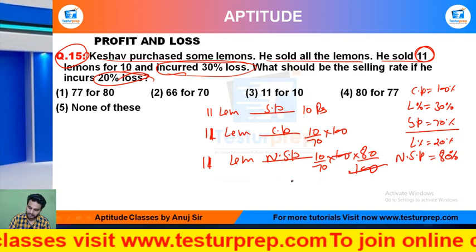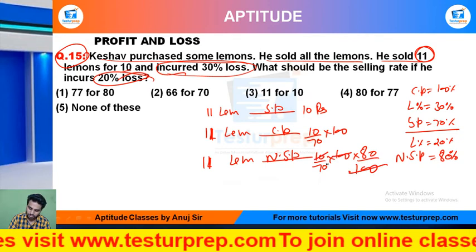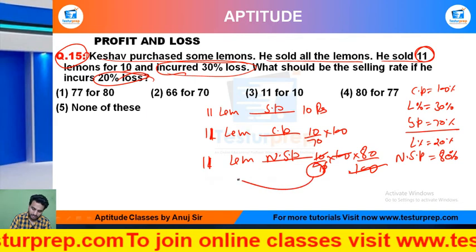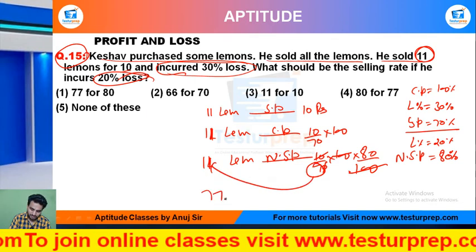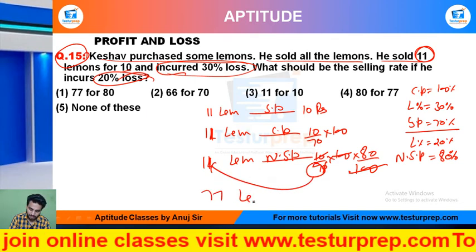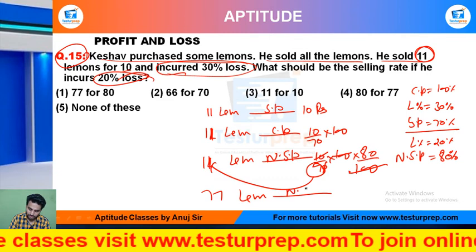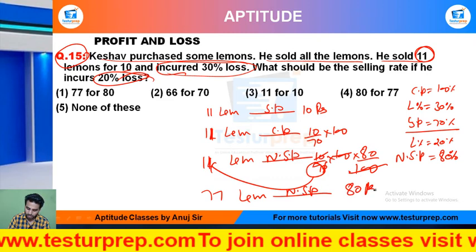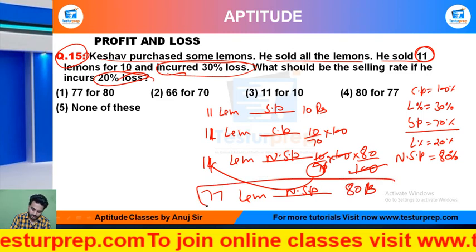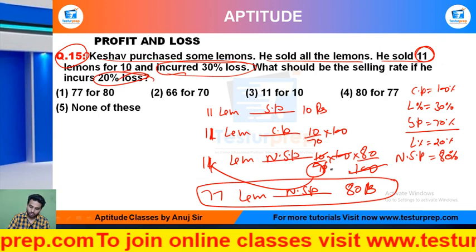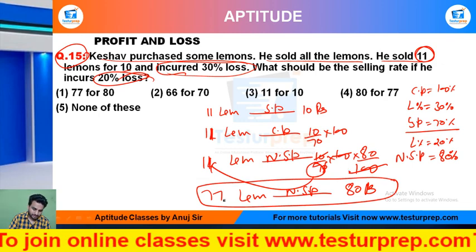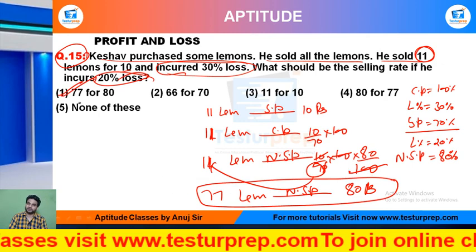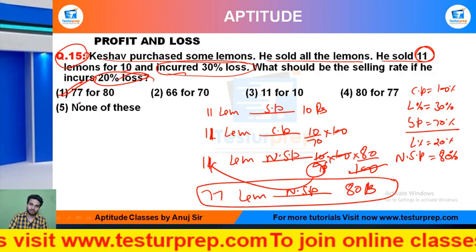The 100s cancel out, and the zeros cancel out. So the new SP will be equal to 80 rupees. The first option is your answer.